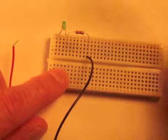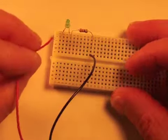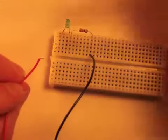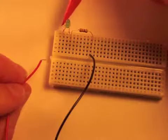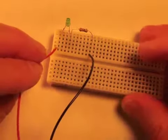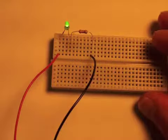And now I'm going to put this red lead into row number one, the same row as this lead of the LED. So I'm going to put that here. And you'll notice... I'm going to turn this light off. Maybe you can see a little bit better. My LED lights up.